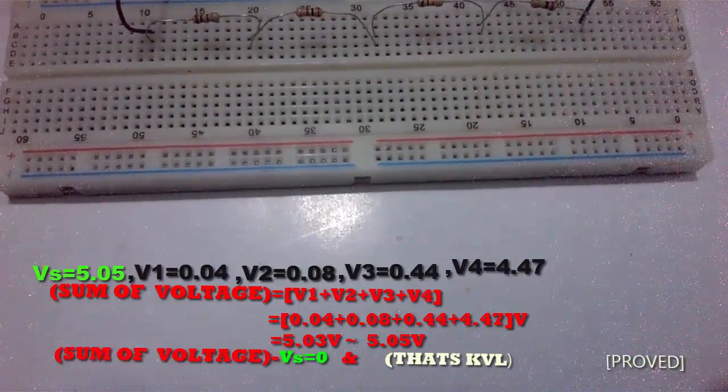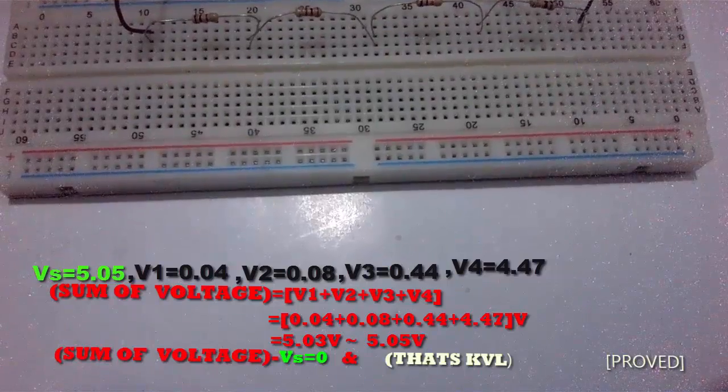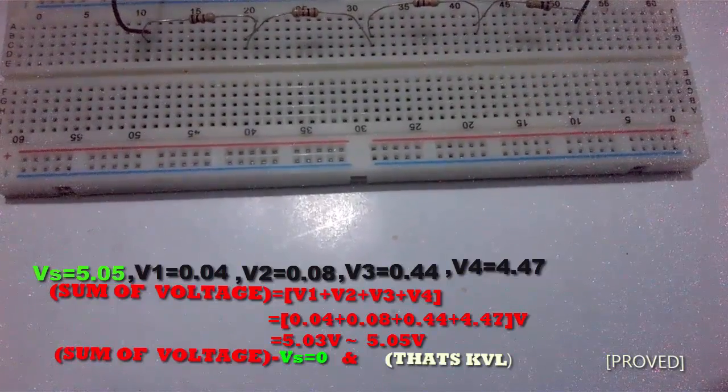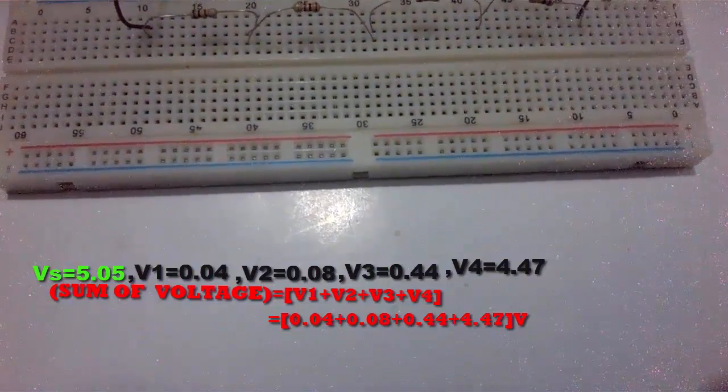So, the sum of voltage minus Vs is equal to 0. And that's KVL, and it is proved.